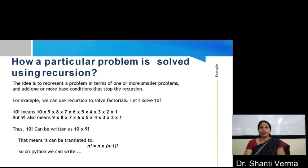For example, if you want to solve factorials using recursion, let's take an example to calculate the factorial of 10. We know that factorial of 10 means 10 into 9 into 8 up to 1. But when calculating the factorial of 9, it also means 9 into 8 into 7 up to 1.